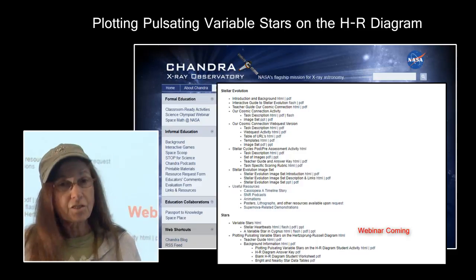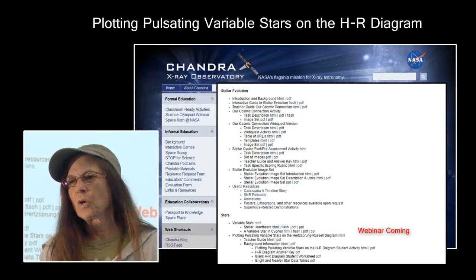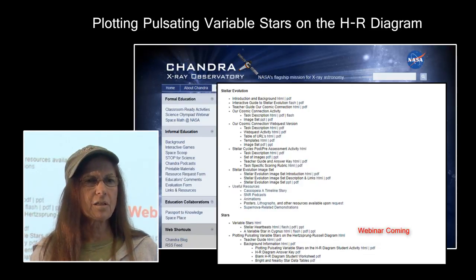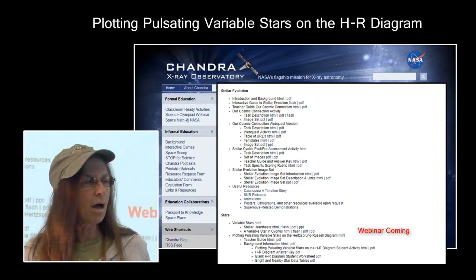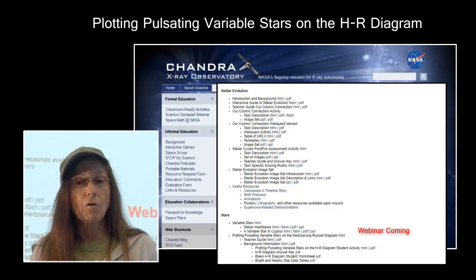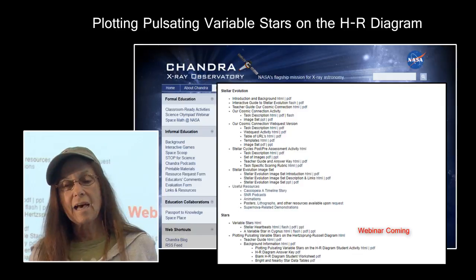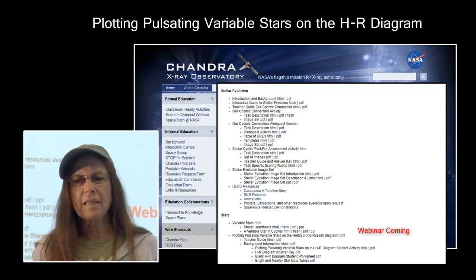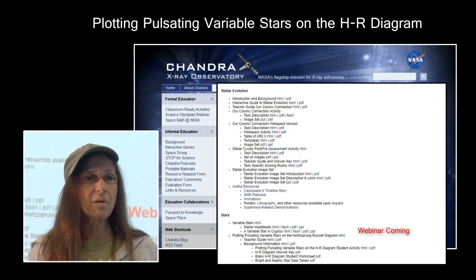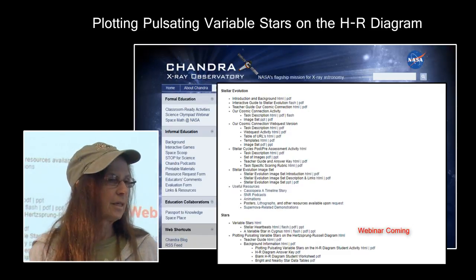There will be a webinar for the variable star plotting activity before too long. I'm going to eliminate the star category, take the plotting pulsating variable star materials, and post those under Stellar Evolution where they belong. The variable star material needs a complete and total overhaul before it goes back up. For information about variable stars, there is a large section in the Astronomy Coach's Manual written for the Science Olympiad bookstore — you can read more than you wanted to know about variable stars there.